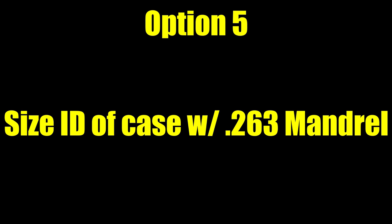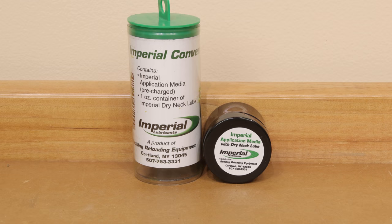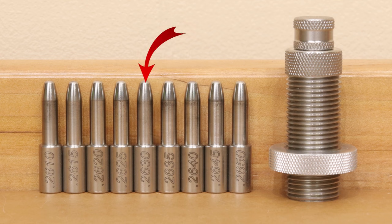For option 5, it's going to be very similar to 2 and 3, just using a different expander mandrel. Again, dry neck lube, and an expander mandrel sized at 263 thousandths.